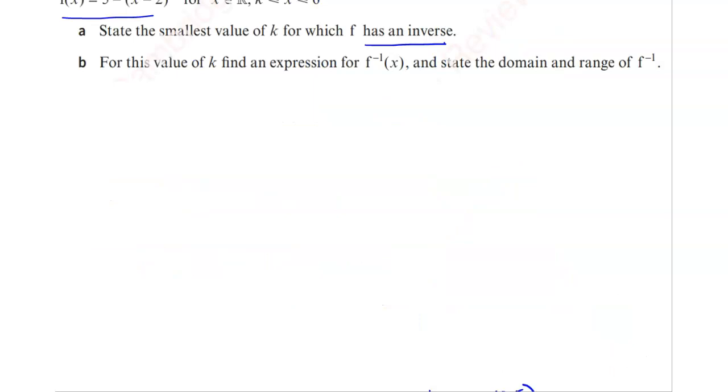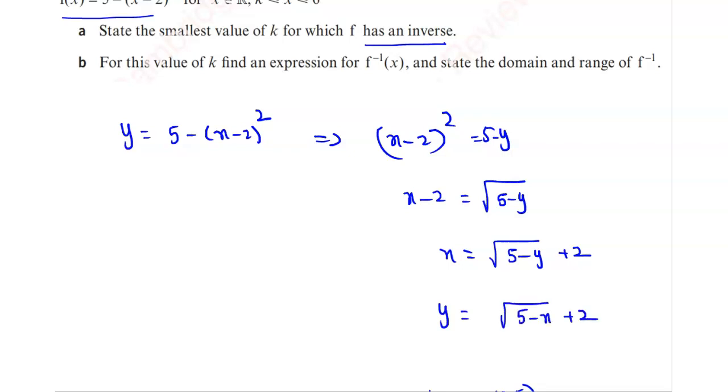Find f⁻¹(x). For that, take y = 5 - (x - 2)². From this, first simplify for x, which is equal to (x - 2)² = 5 - y. Then x - 2 = √(5 - y), so x = √(5 - y) + 2. Now we have to interchange the variables x and y. Hence we can have y = √(5 - x) + 2, which is equal to f⁻¹(x). So the inverse function is √(5 - x) + 2.